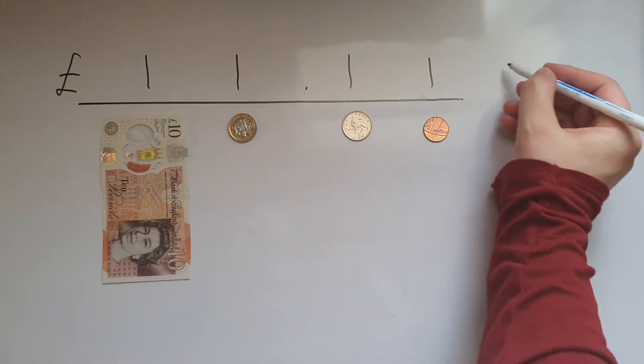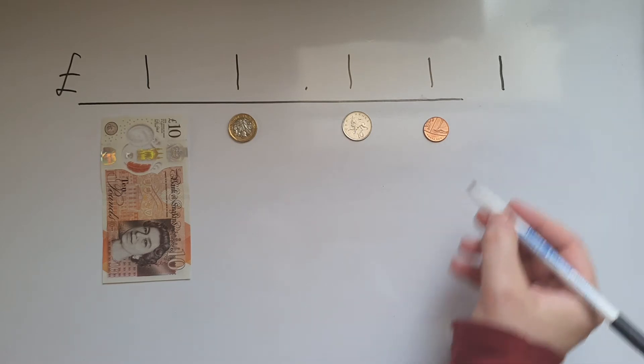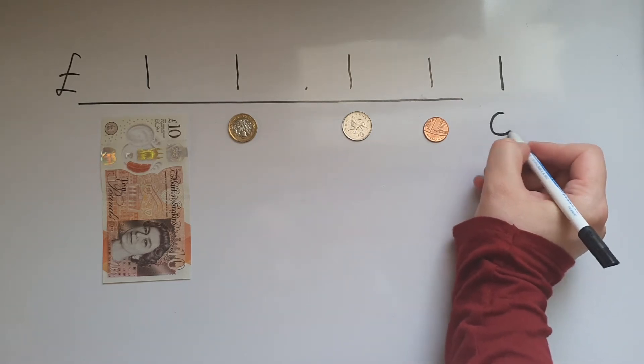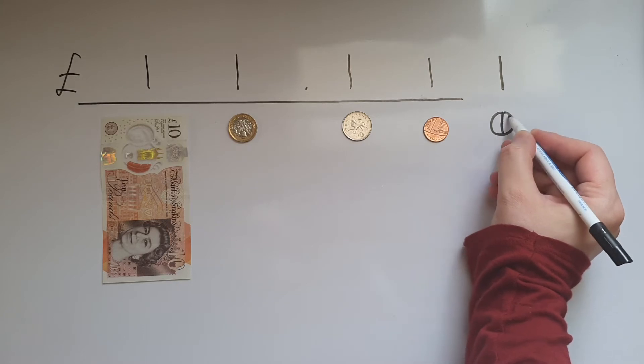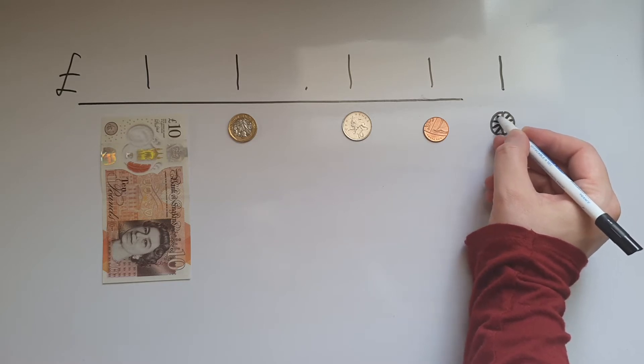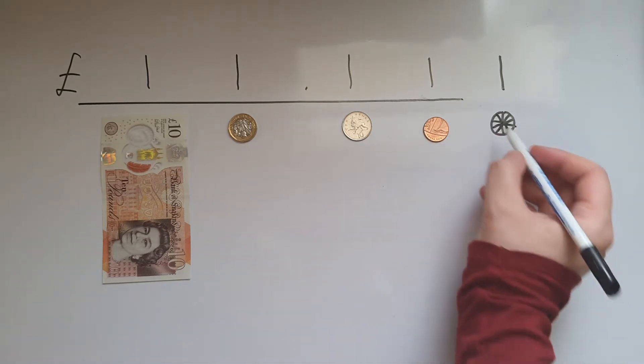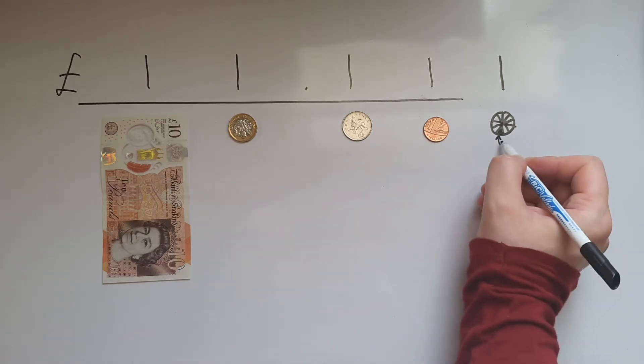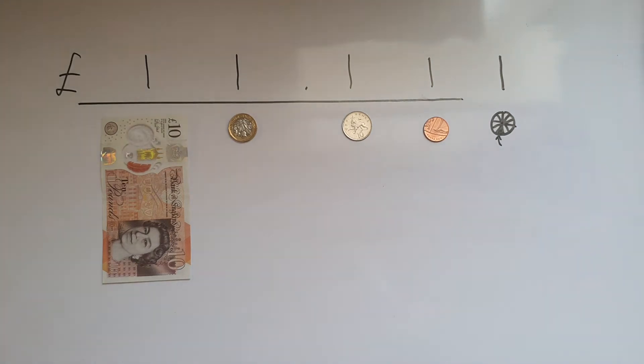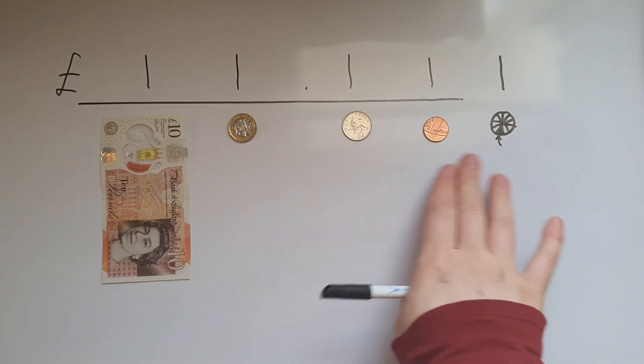So if you had another digit here that would be ten times smaller than the one pence. We don't have a coin to represent that. It means just one of these bits, a tenth of a penny.